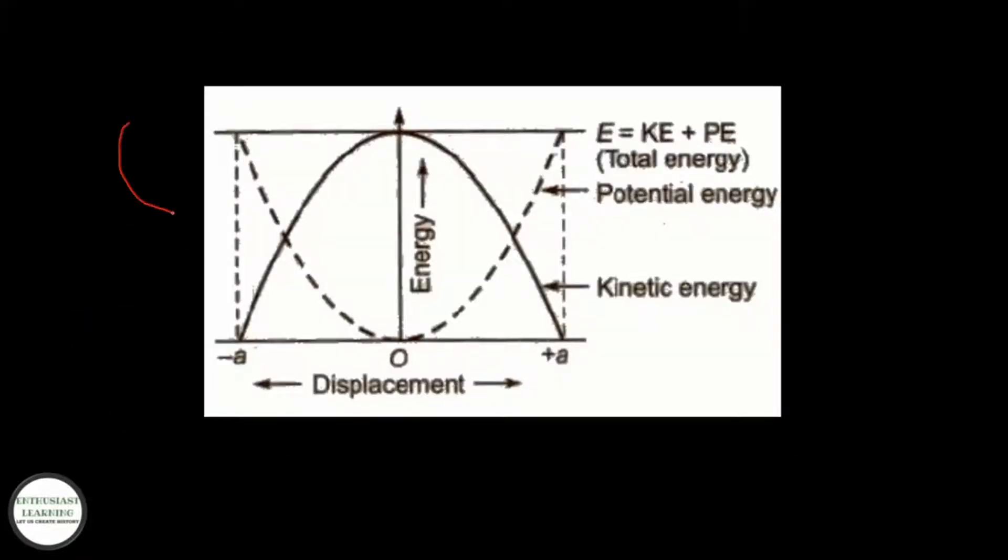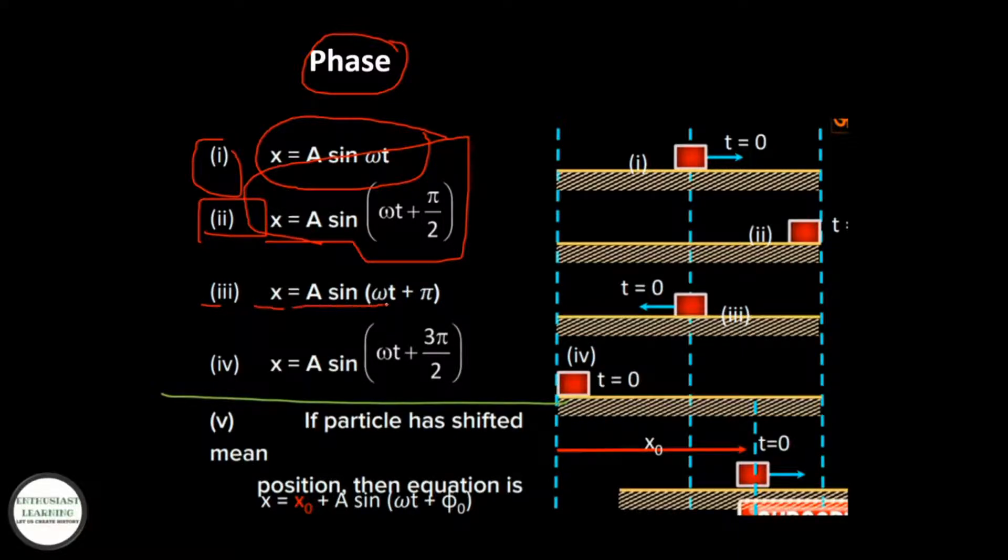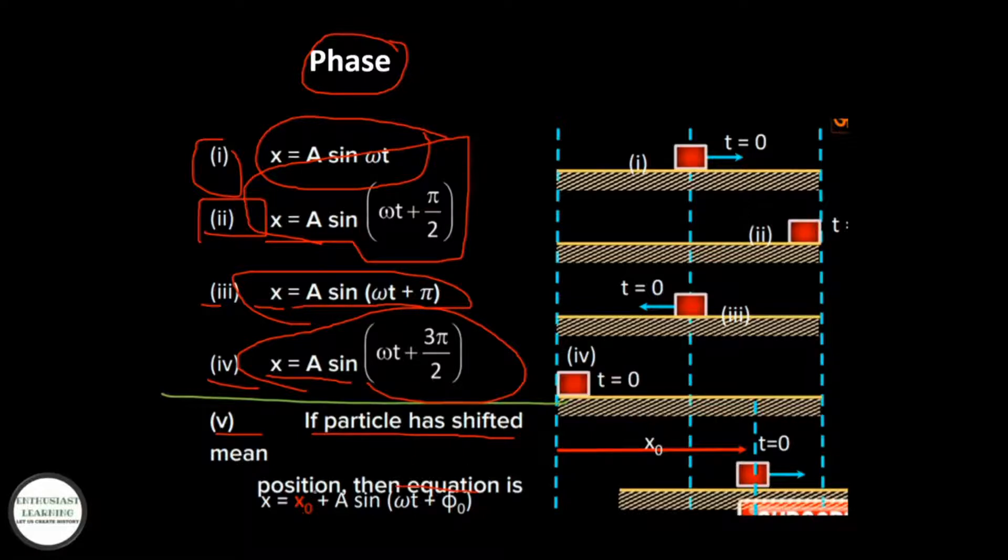Here is the graph of energy in SHM. Now phase in SHM. First: x = A sin(ωt). Second: x = A sin(ωt + π/2). Third: x = A sin(ωt + π). Fourth: x = A sin(ωt + 3π/2). Fifth: if the mean particle has shifted, then the equation is x = x₀ + A sin(ωt + φ₀).